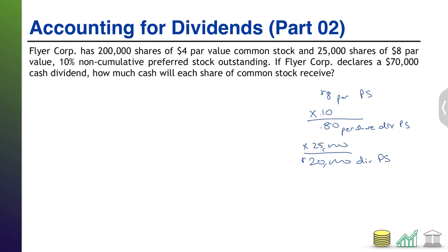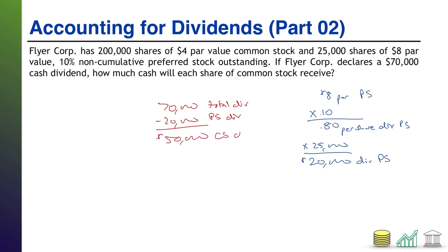Let's do a bit more math. The total dividend was $70,000. We take away $20,000 for the preferred shareholders, leaving $50,000 for the common shareholders. That $50,000 gets divided equally over 200,000 shares of common stock, which means we are looking at a $0.25 dividend per share of common stock — and that is the answer to our question.